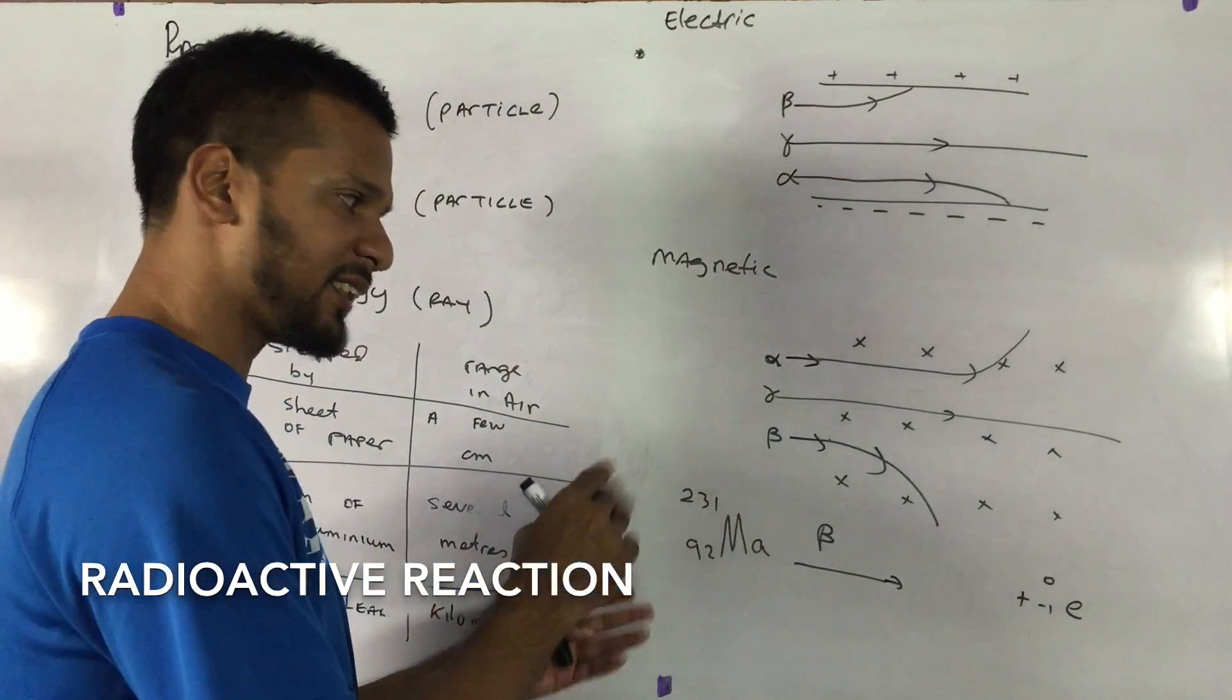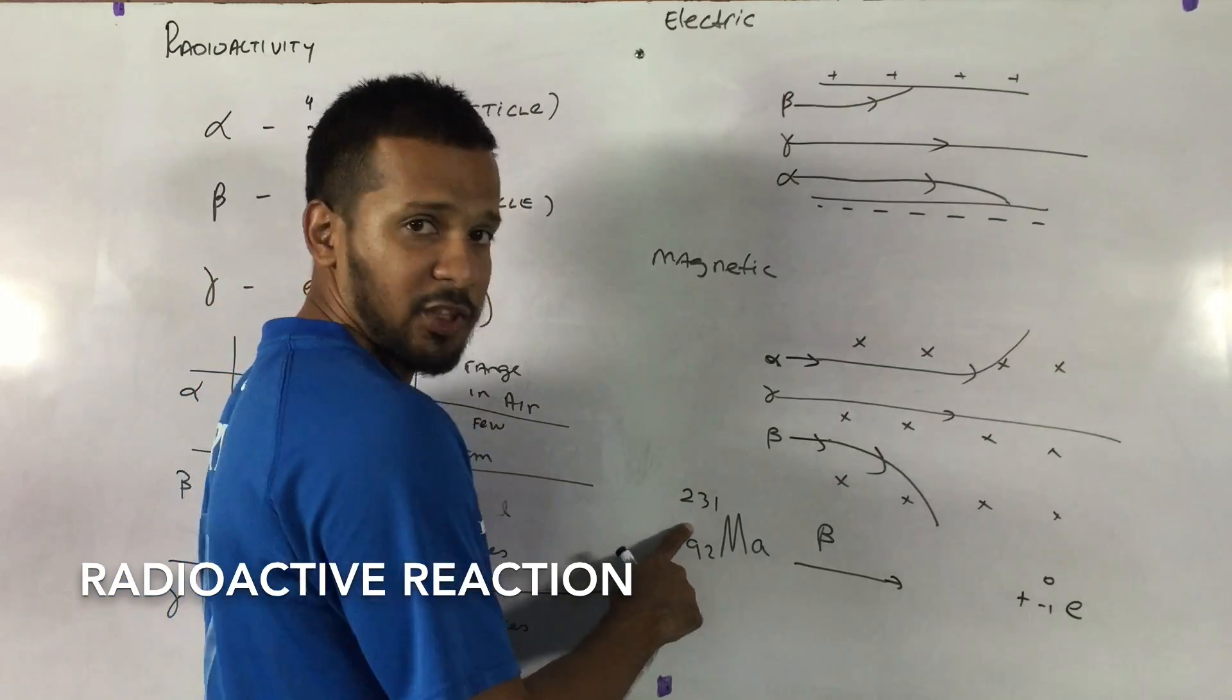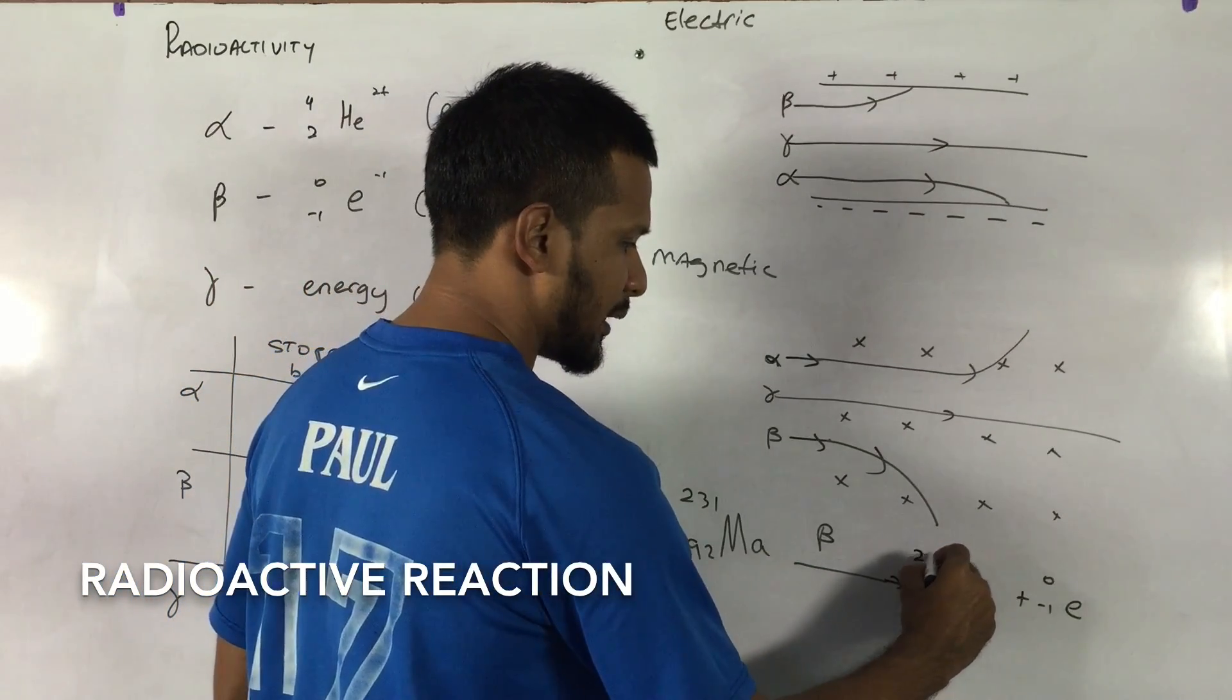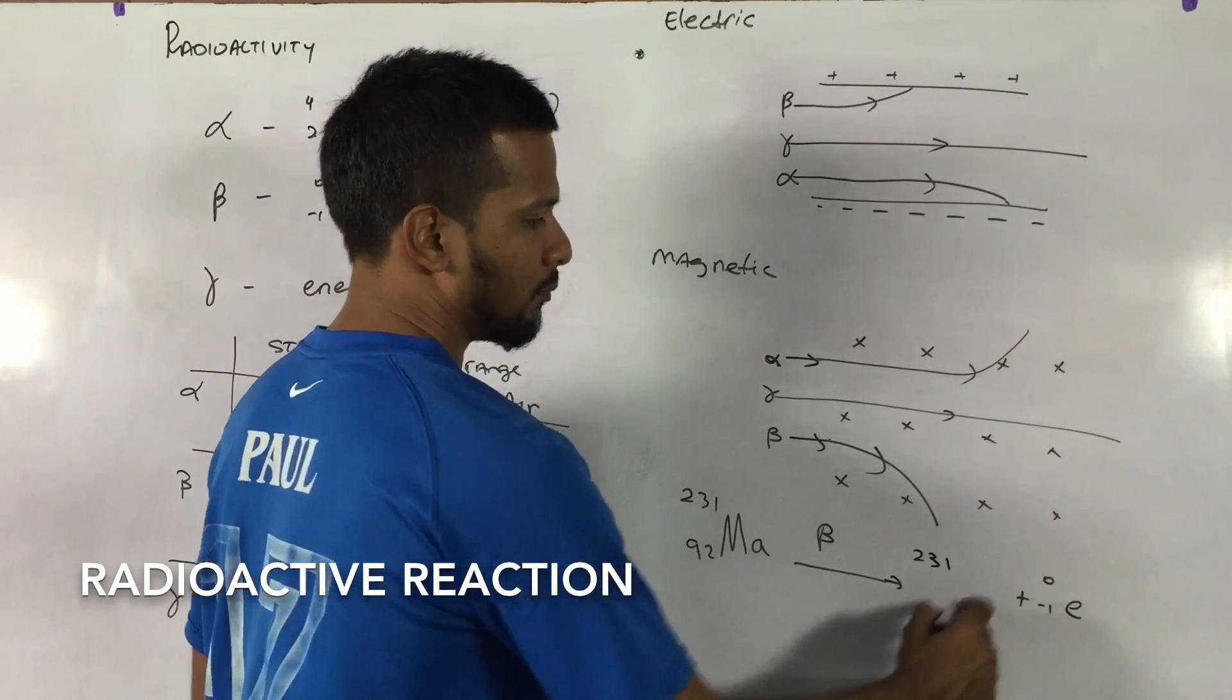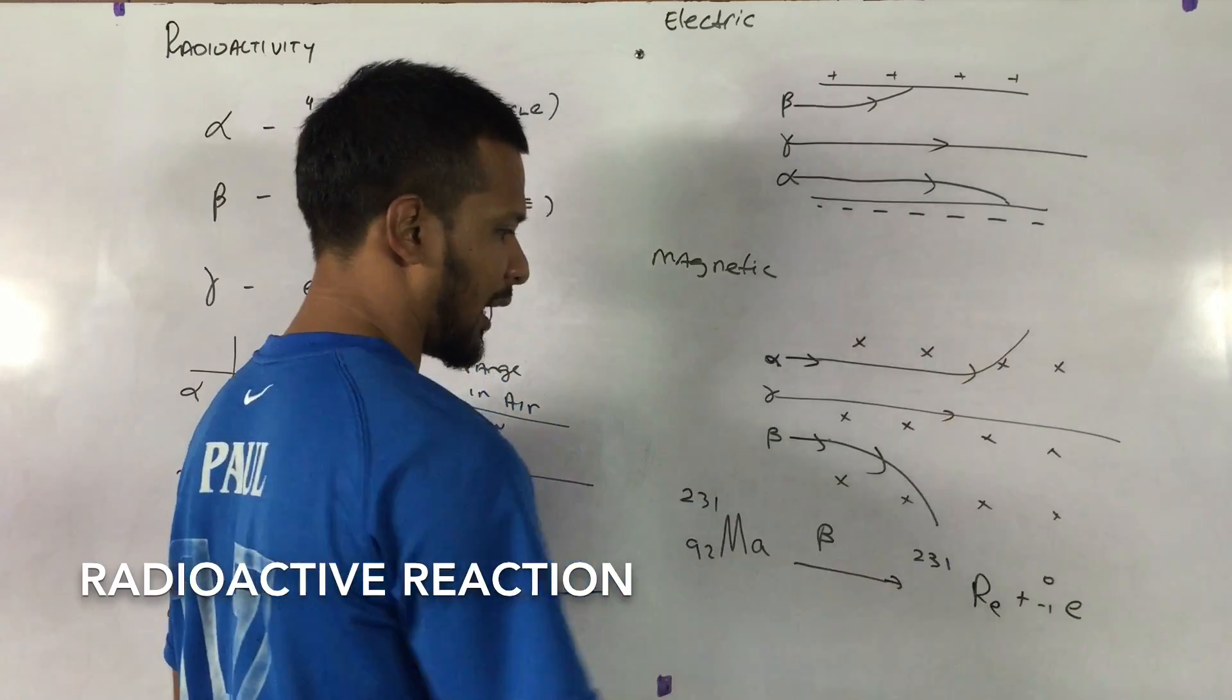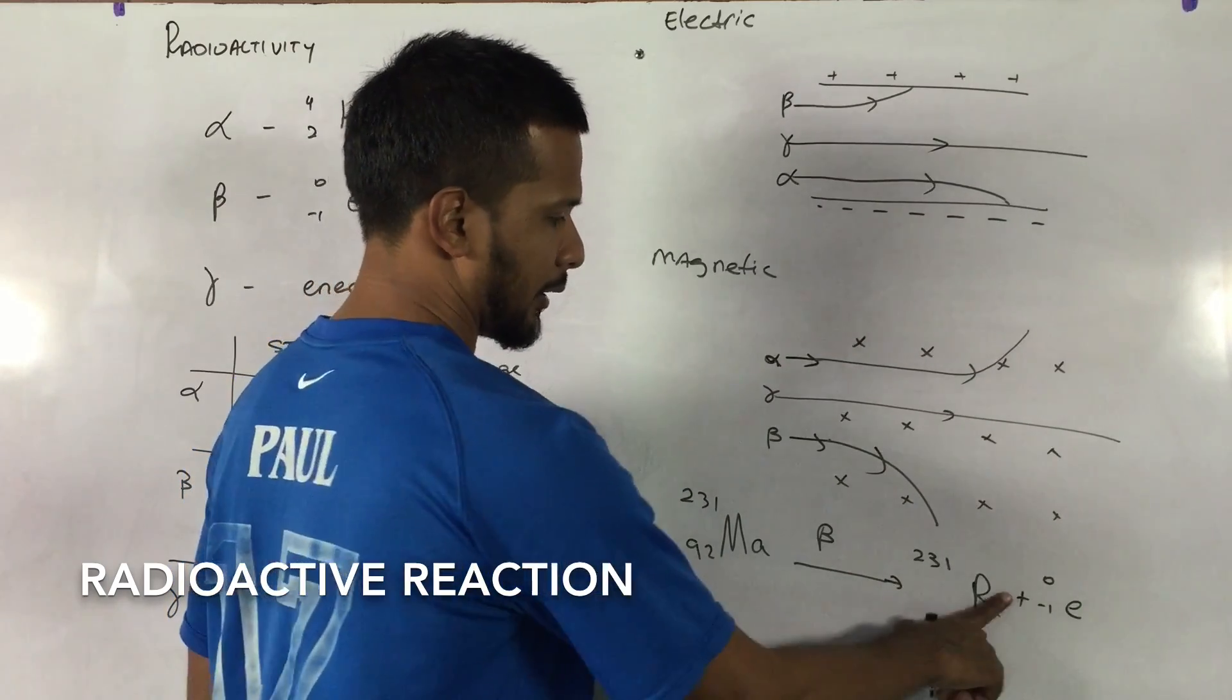So based on the last example, we should see that the mass number shouldn't change. So that will be 231. That's the same variable with R E.